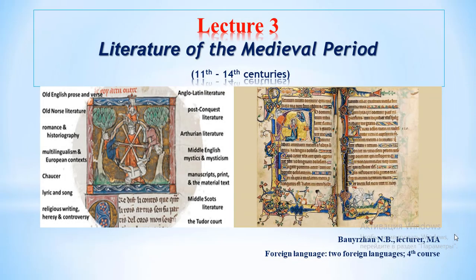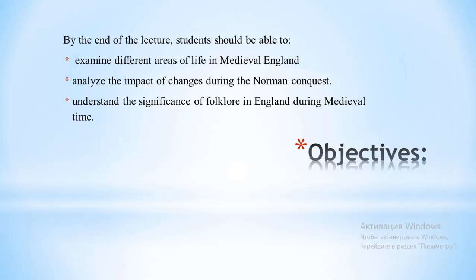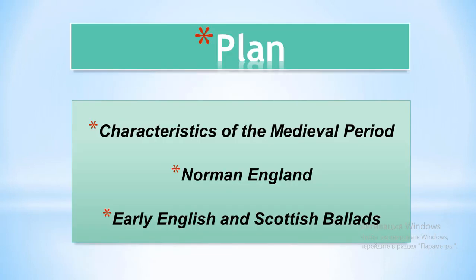The third lecture of English Literature is devoted to the theme of English literature of the middle centuries, from the 11th to 14th centuries. By the end of the lecture, students should be able to examine different areas of life in medieval England, analyze the impact of changes during the Norman Conquest, and understand the significance of folklore in England during medieval times. Topics include: characteristics of the medieval period, Norman England, and early English and Scottish ballads.